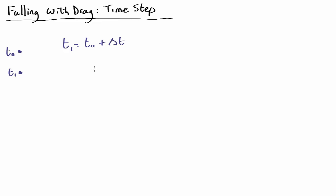So what we'll do is we'll assume that at the start, at time 0, we know the position x0 and the velocity v0. The question then is, what are the new position and velocity at the end of this time step?